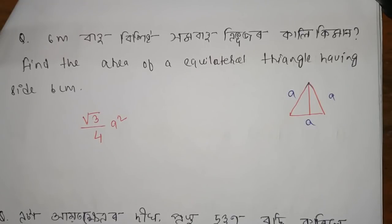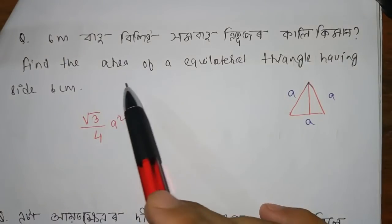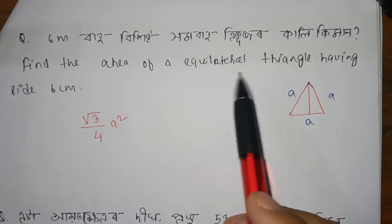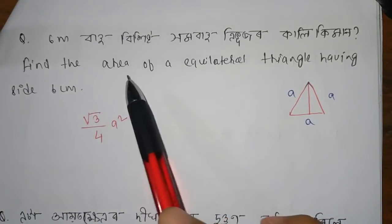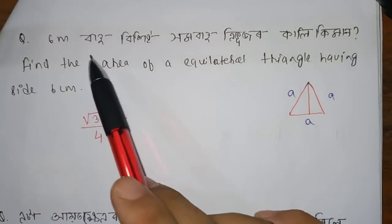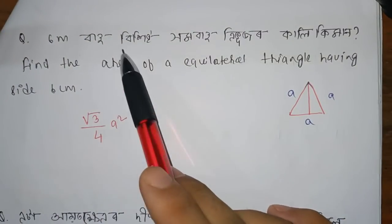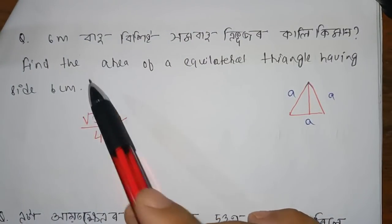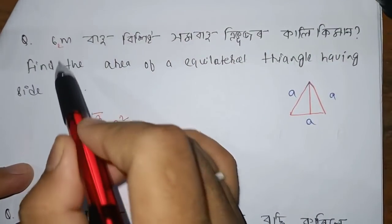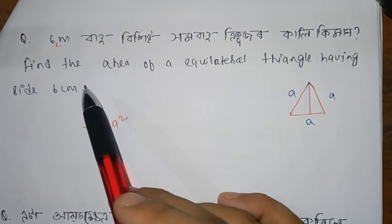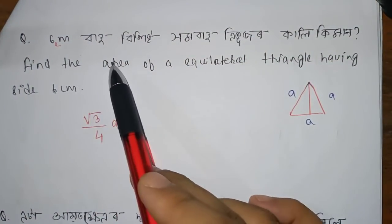The next step: find the area of the equilateral triangle having side 6 cm. We have the side of 6 cm, so apply the formula.